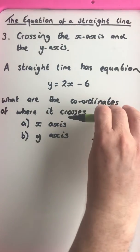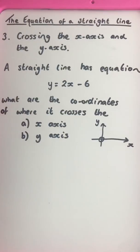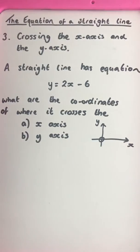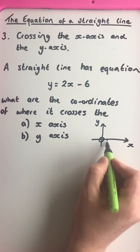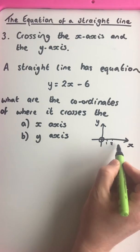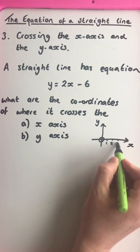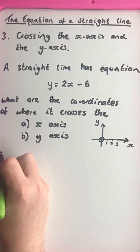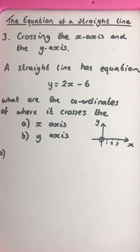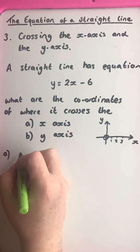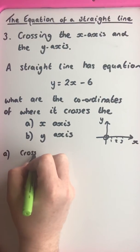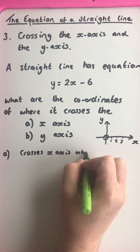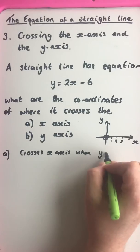Whether it be in the positive direction or the negative direction, so on the x-axis, your y values are always 0. So that would be 1 and 0, that would be 2 and 0, that would be 3 and 0. So it crosses the x-axis when y equals 0.